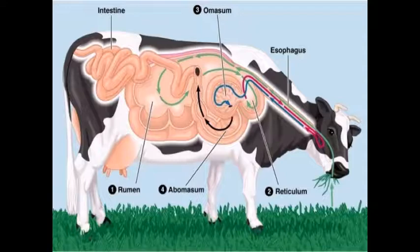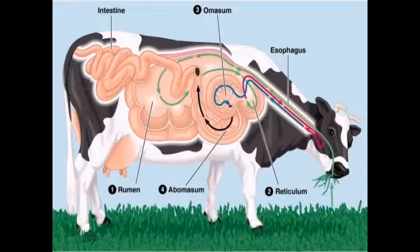The salivary glands secrete saliva containing three things: water, which helps dissolve substances in food; mucus, which helps bind the food together and lubricates it for easy swallowing; and amylase enzyme, which starts chemical digestion of starch. In the mouth, amylase breaks starch down into maltose — not all the way to glucose since food is not kept in the mouth for a long time.